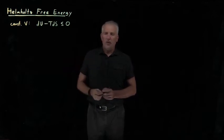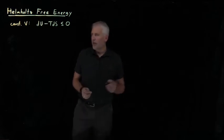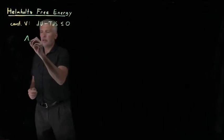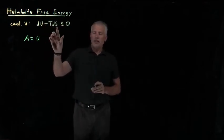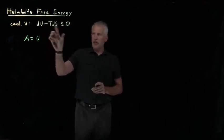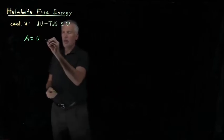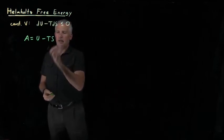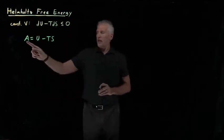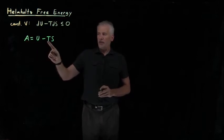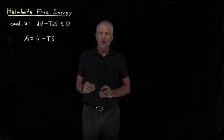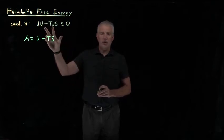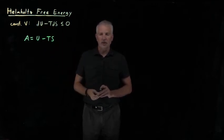That quantity is important enough that we're going to want to give it a name. To do that, we will define a new quantity. Since this looks like some energy minus T times some entropy, we'll start by defining this new quantity: energy minus temperature times entropy. This turns out not to be exactly the same as this criterion we've got up here, but it's going to be very close, as we'll see in just a second.